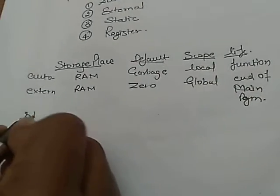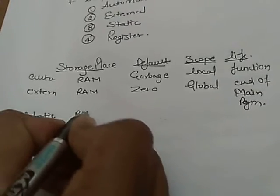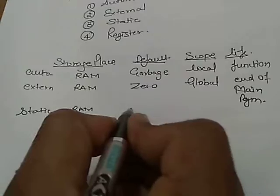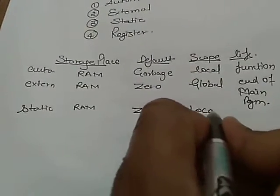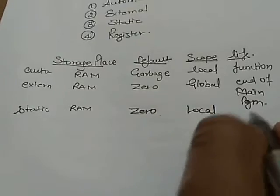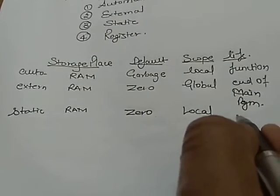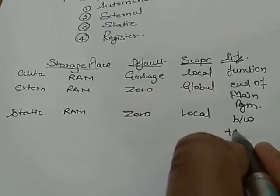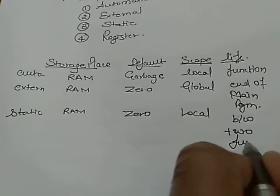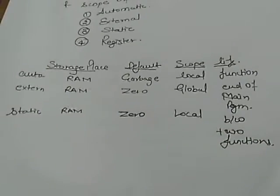Next one is static. Its storage is inside the RAM. Default value is zero. Its scope is local and end of the main program, and in the end of main program between two functions or multiple functions.